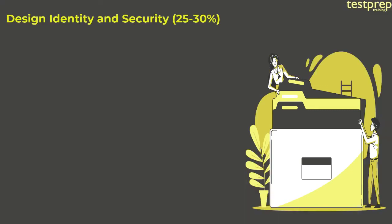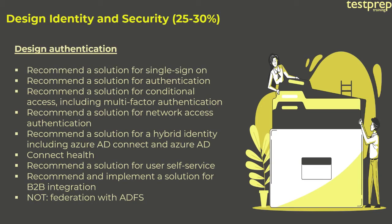Design Identity and Security comprises 25-30% weightage, explained in four parts. Number one: Design Authentication, divided into nine parts — recommend a solution for single sign-on; recommend a solution for authentication; recommend a solution for conditional access including multi-factor authentication; recommend a solution for network access authentication; recommend a solution for hybrid identity including Azure AD Connect and Azure AD; connect health; recommend a solution for user self-service; recommend and implement a solution for B2B integration; NOT federation with ADFS.